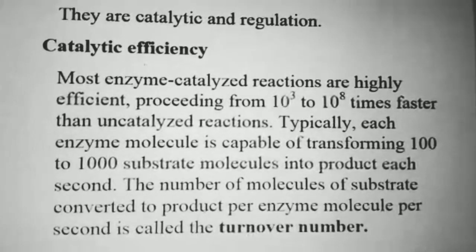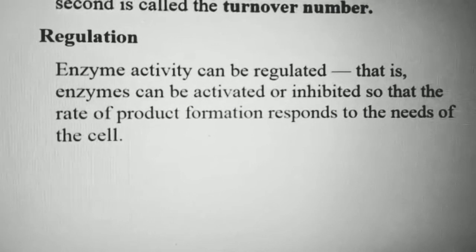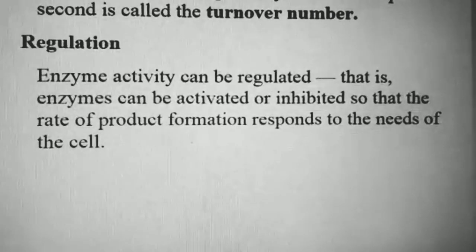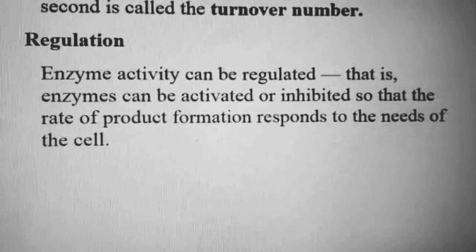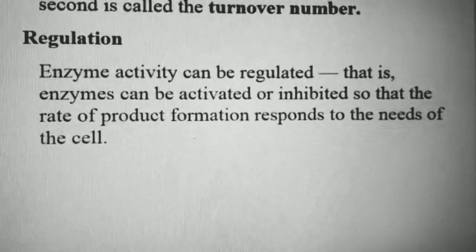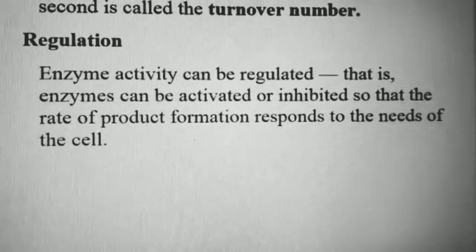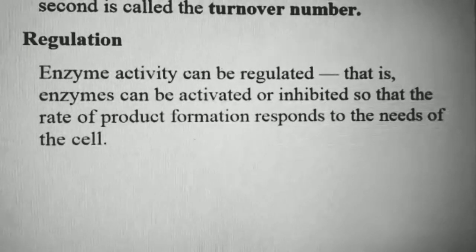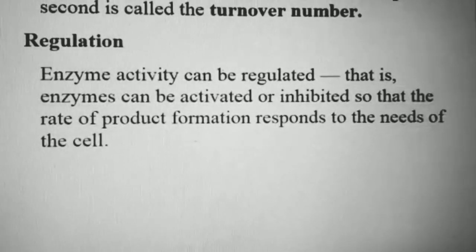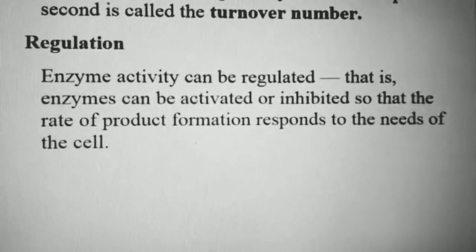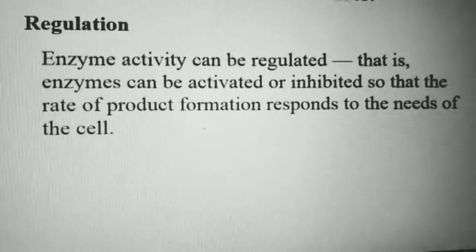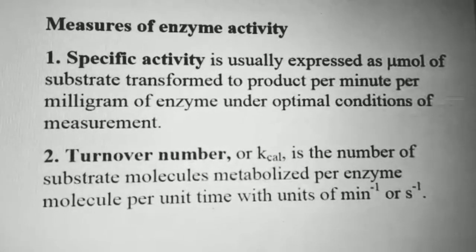Enzyme activity can be regulated — we can either activate or inhibit an enzyme. The rate of product formation responds to the needs of the cell. When there is a need for a chemical reaction, enzyme activity is activated; if the reaction rate must be slowed down, the enzyme is inhibited through a feedback inhibition process.